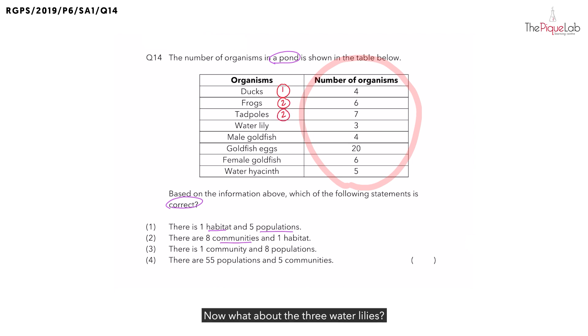Now, what about the three water lilies? That would be the third population. The four male goldfish, that would be the fourth population. What about the goldfish eggs and the female goldfish? Can that be number five and population number six? No, they should all be population number four since they are all the same species.